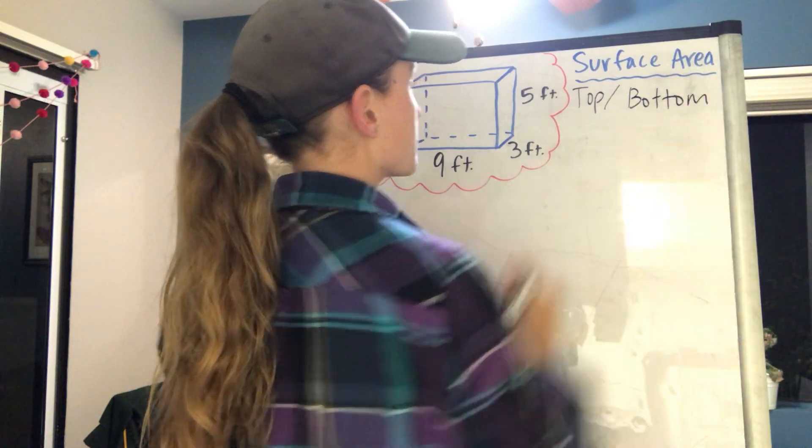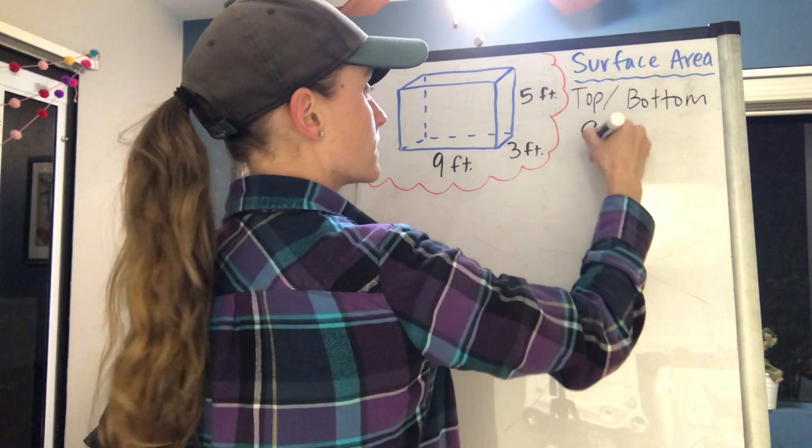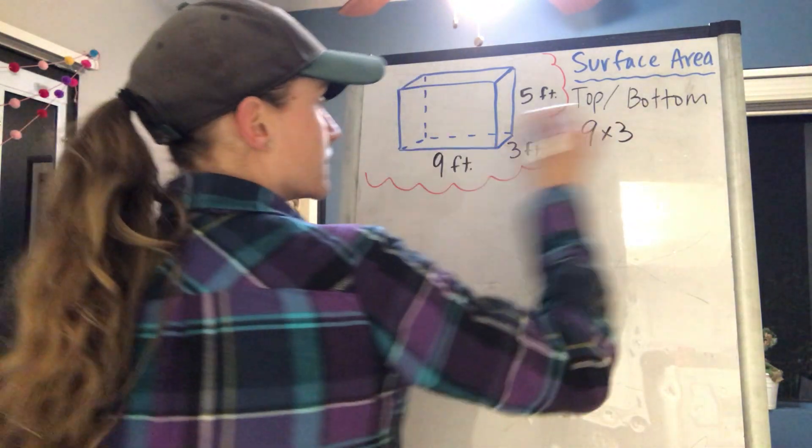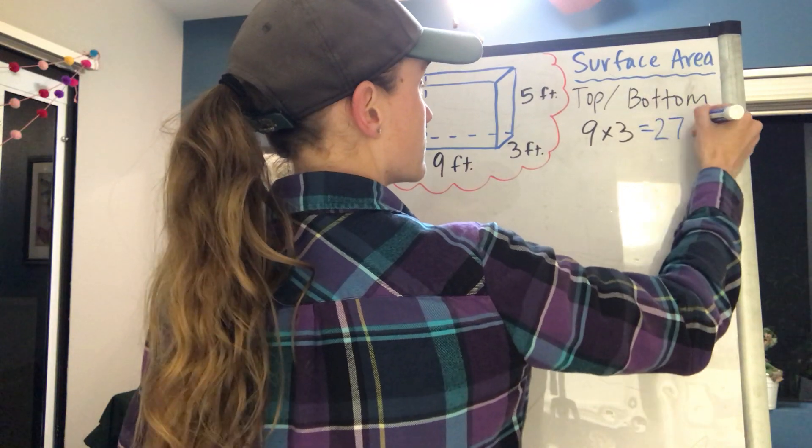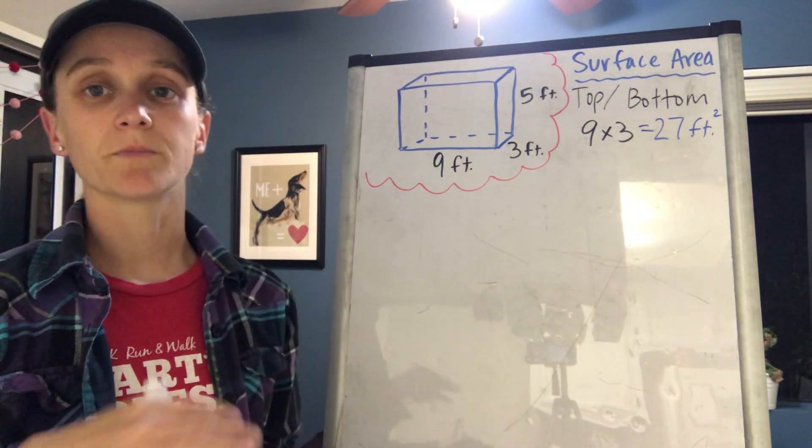Okay, so the bottom here is gonna be 9 feet by 3 feet, so I do 9 times 3, and that's going to give me an area of 27 feet squared.